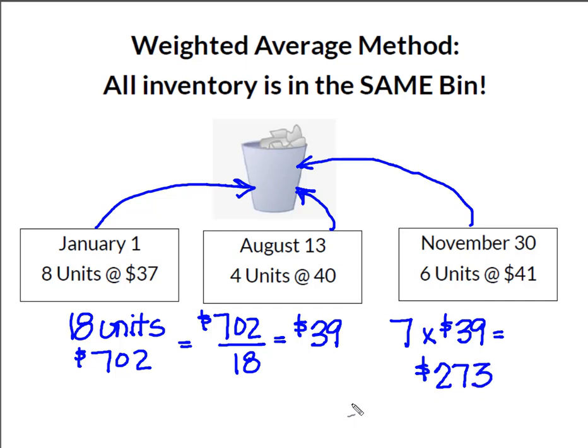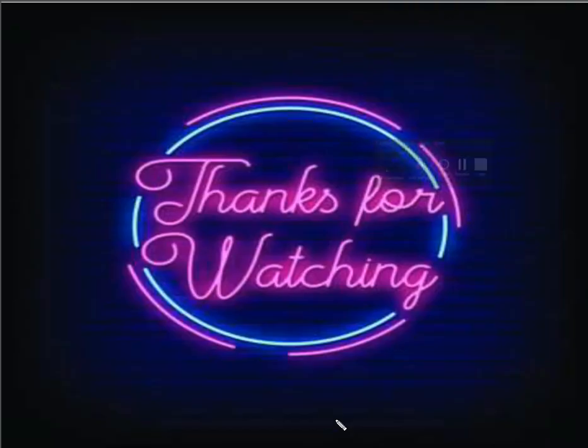What we can see is that using FIFO gives you the lowest inventory cost, LIFO gives you a cost that's a little bit higher, and weighted average gives you the highest inventory cost. Which inventory cost method you choose would depend on the tax situation of the business, since inventory is a component of cost of goods sold. I hope you found this useful — thanks for watching.